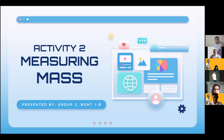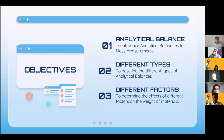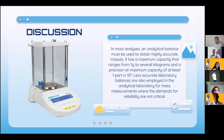Good morning, everyone. This is the activity on measuring mass, presented by Group Two. Our objectives for this reporting are to introduce the analytical balance for mass measurements, to describe the different types of analytical balances, and to determine the effects of different factors on the weight of materials.